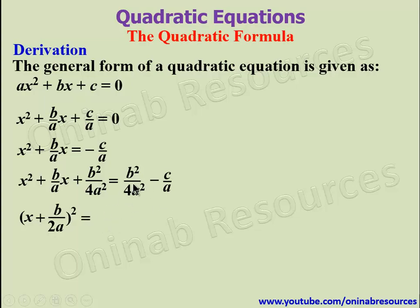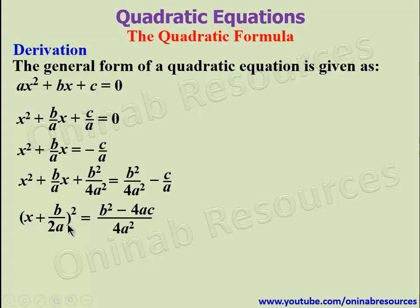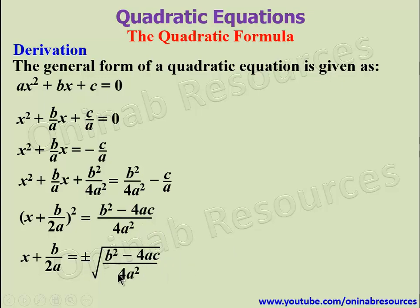The square root of b squared over 4a squared gives us b over 2a, then we square it. On the right hand side, making this a single fraction, the LCM is 4a squared. 4a squared divided by 4a squared gives 1, multiplied by b squared gives b squared; minus 4ac. We now remove the square by finding the square root of both sides, so x plus b over 2a is equal to plus or minus the square root of b squared minus 4ac over 4a squared.